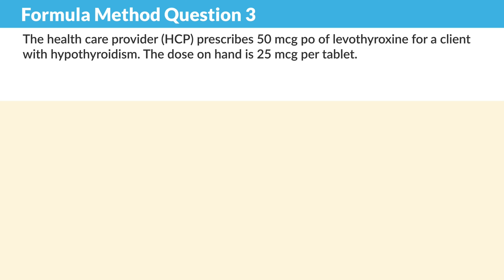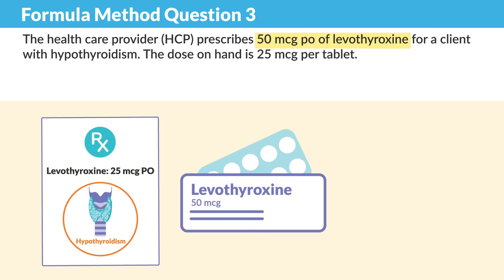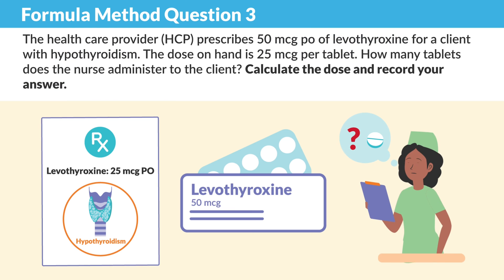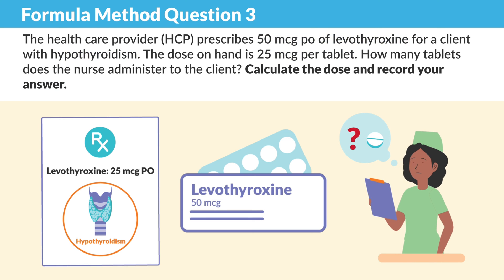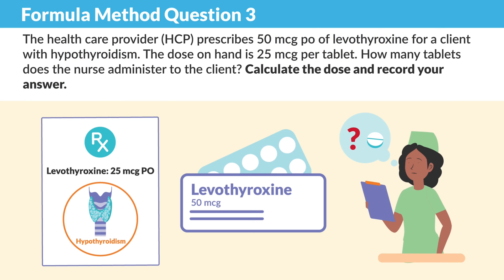Now for question three, the healthcare provider prescribes 50 micrograms P.O. levothyroxine for a client with hypothyroidism. The dose on hand is 25 micrograms per tablet. How many tablets does the nurse administer to the client?